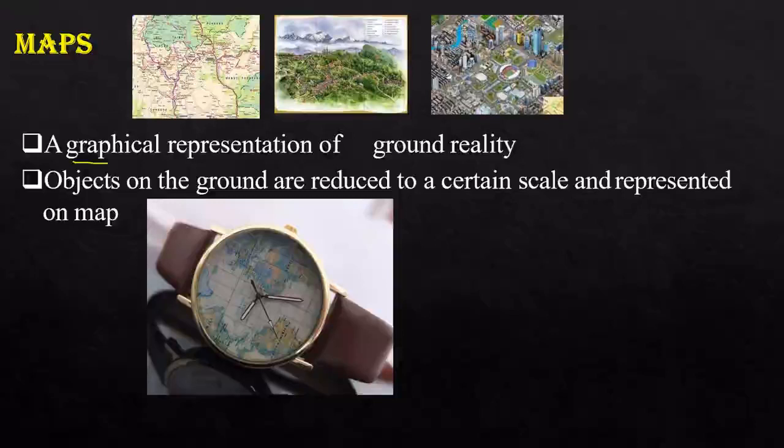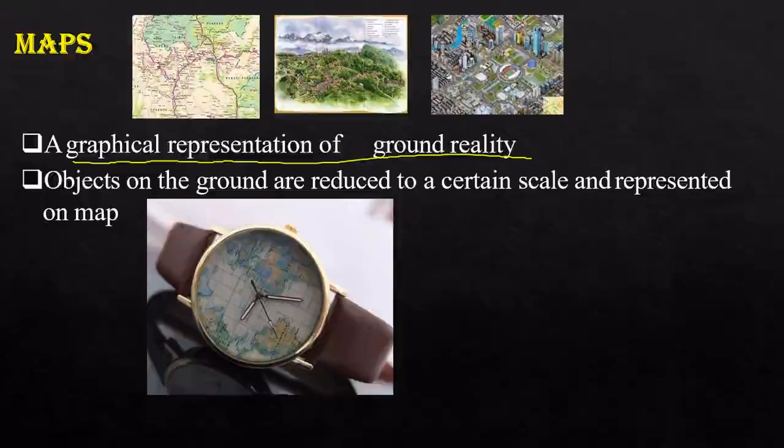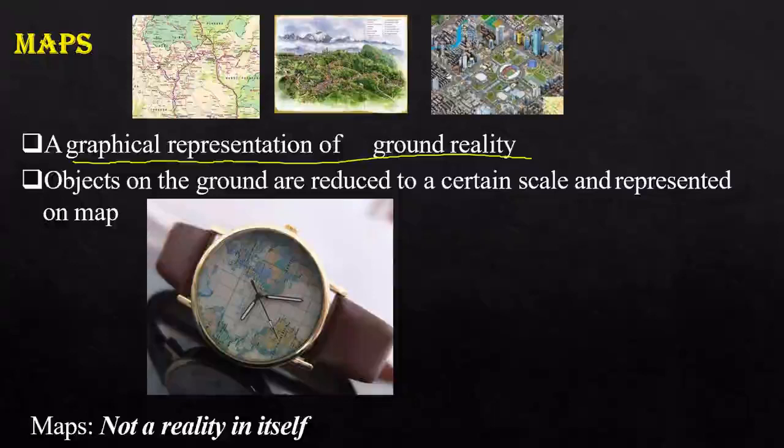What is a map? It is a graphical representation of ground reality. A map is not real, but it is the representation of what is real. Objects on the ground are reduced to a certain scale and represented on maps. Maps are not a reality in themselves — they are the representation of the real earth.